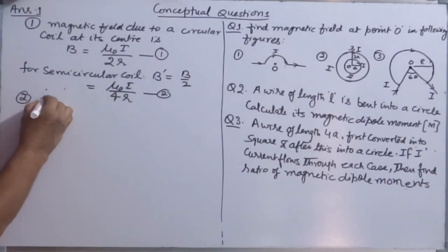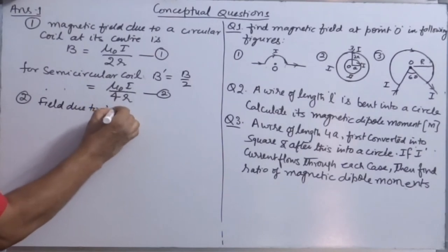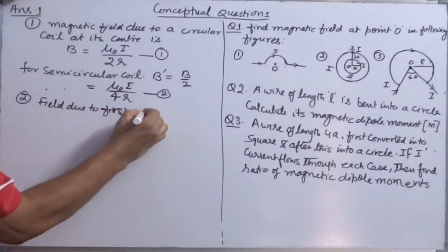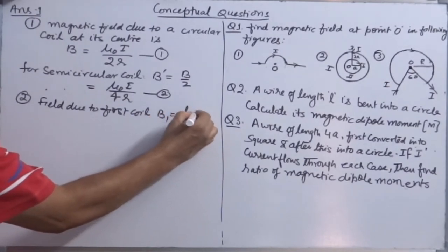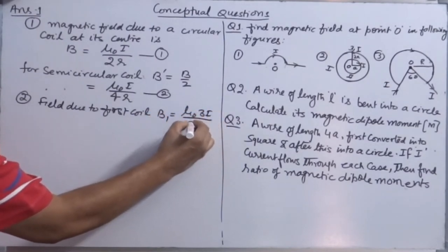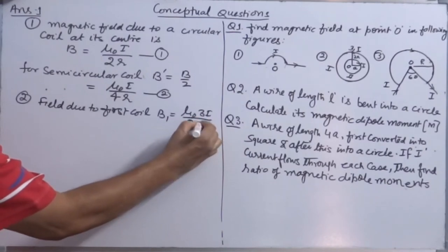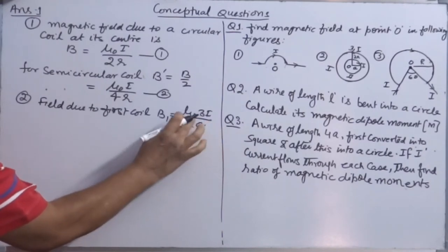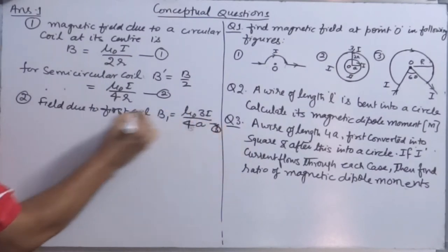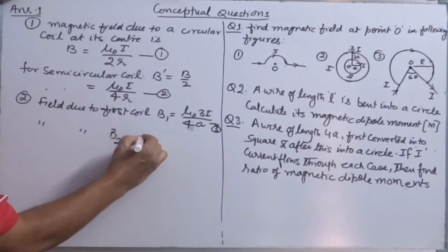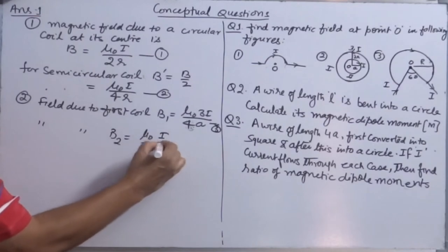Field due to first coil, B₁ = μ₀(3I)/2A = 3μ₀I/4A. Field due to second coil, the inner coil is μ₀I/2A.